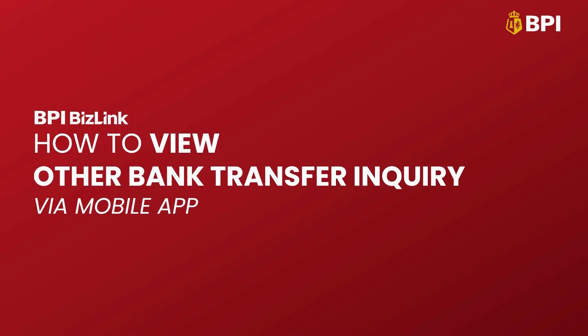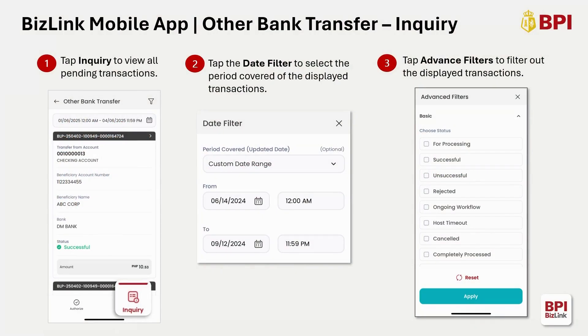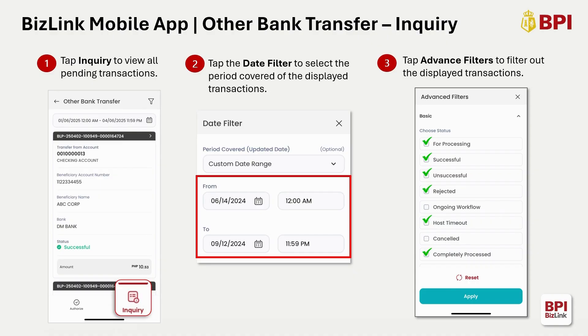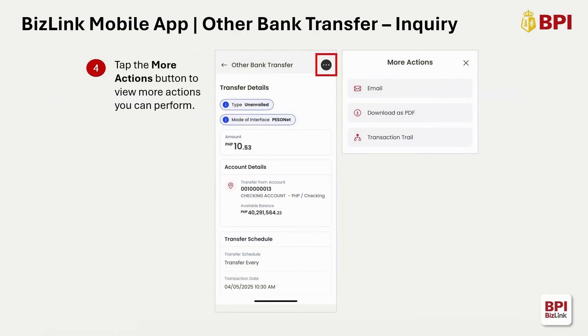You can also easily view your Other Bank Transfer Inquiry via the new BizLink mobile app. Once you're in the Other Bank Transfer page, just tap the Inquiry tab to view all pending transactions. Tap the Date filter to select a date range. On Advanced Filters, select the status that you want to be displayed, then click Apply. Tap the More Actions button to view more actions that you can perform.